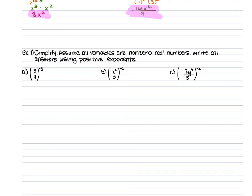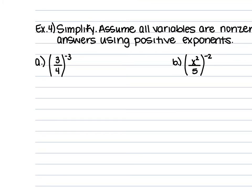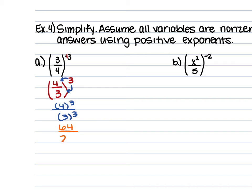For example 4a, we have 3 fourths raised to the negative 3rd power. We want to turn that negative 3 into a positive 3 first by taking the reciprocal of 3 fourths. So it becomes 4 thirds raised to the positive 3rd power. That power goes to both numerator and denominator, giving us 4 cubed over 3 cubed. 4 times 4 times 4 is 64, and 3 times 3 times 3 is 27. So the final answer is 64 over 27.